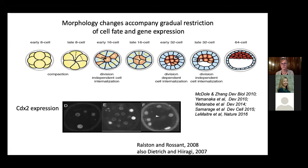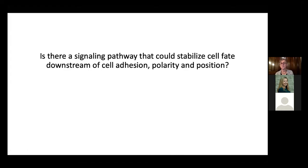CDX2 — my favorite gene — is a transcription factor absolutely required to specify trophectoderm fate. By the blastocyst, it's expressed in all the outside cells. But if you look earlier, it comes on somewhat randomly during this process and then gradually gets restricted to the outside cells. This suggests that this gene expression pattern is somehow related to morphology, cell adhesion, cell polarity, and cell position. We kept asking ourselves: is there a signaling pathway that could actually stabilize cell fate downstream of these morphological events?